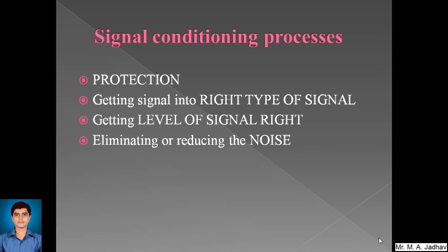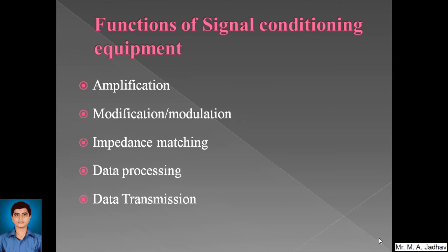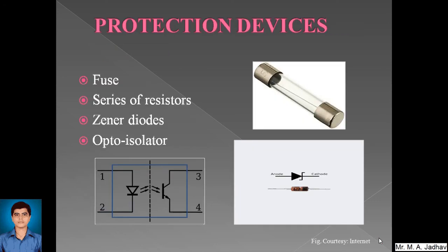These are the different processes of signal conditioning, which will be explained further with examples. Now, the functions of signal conditioning equipment: first is amplification — enhancement of signal level. Second is modification or modulation — change of the form of the signal, such as from AC to DC. Third is impedance matching, keeping the level of signal high. Fourth is data processing — mathematical operations like addition and subtraction can be performed on signals. Fifth is data transmission — transmitting the signal from one location to another.